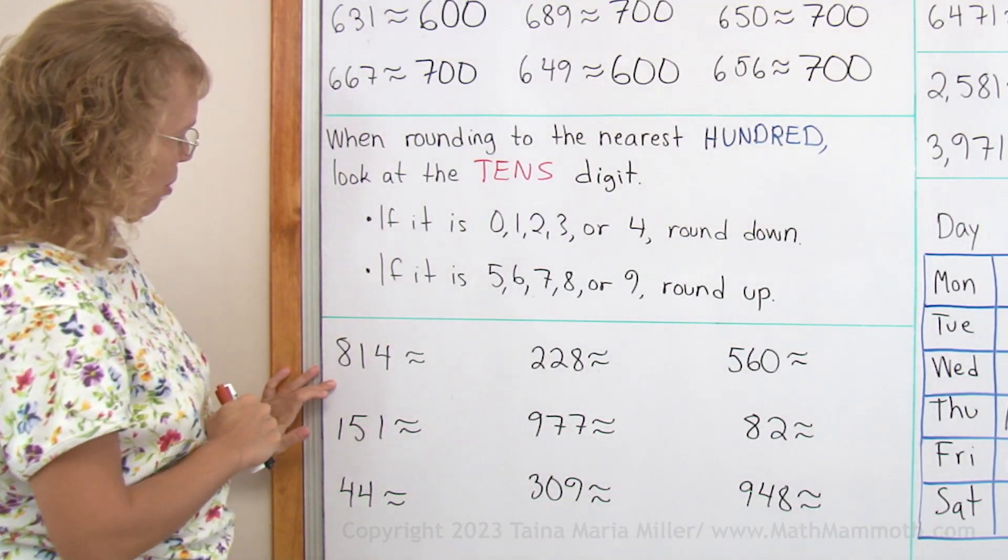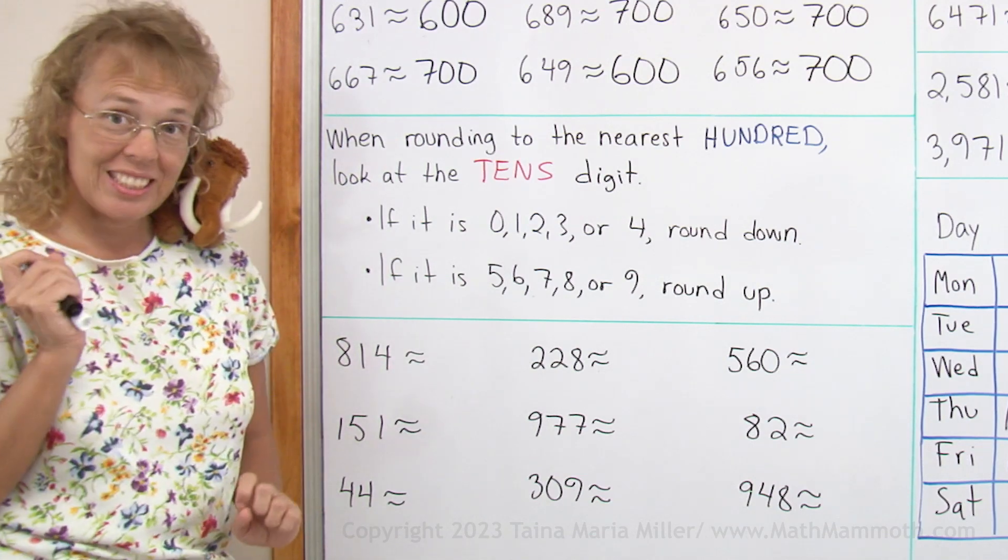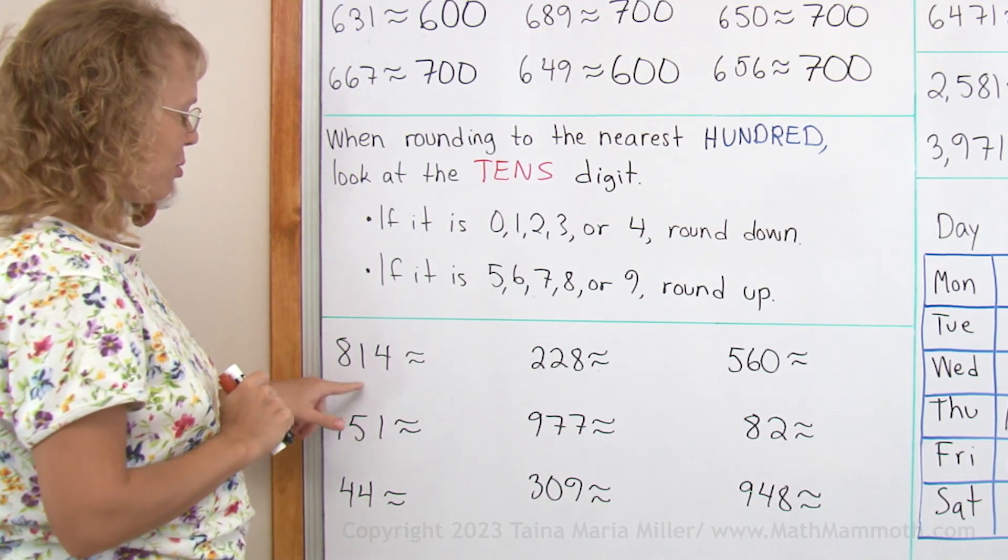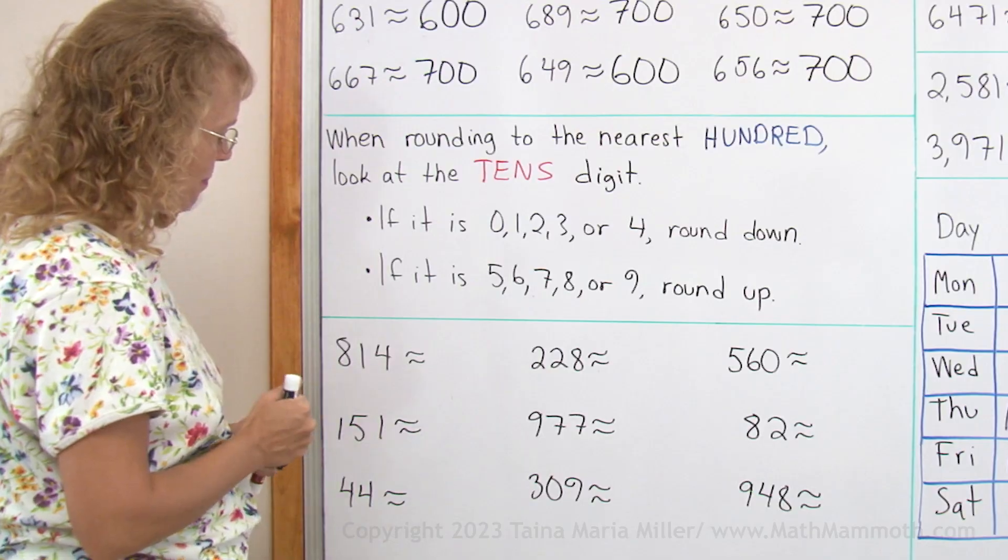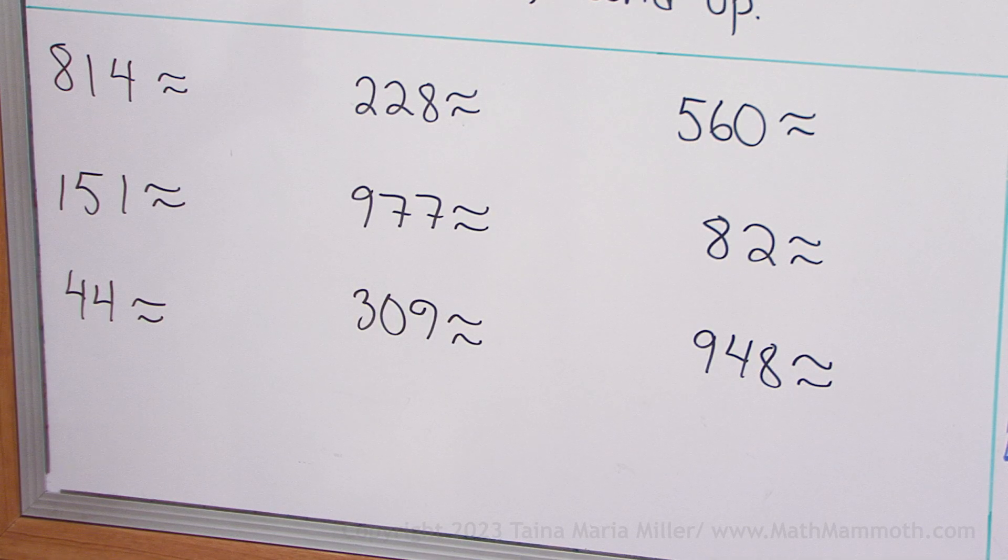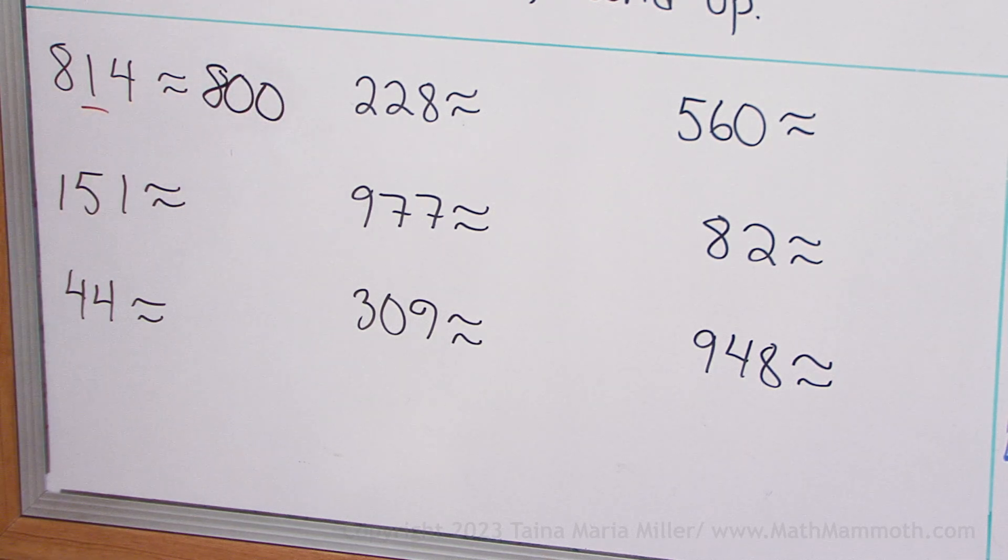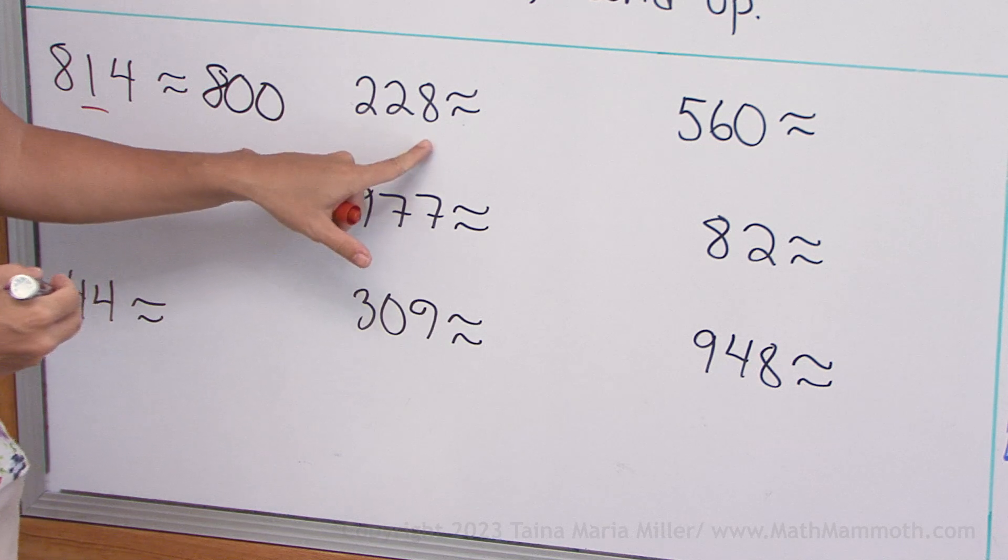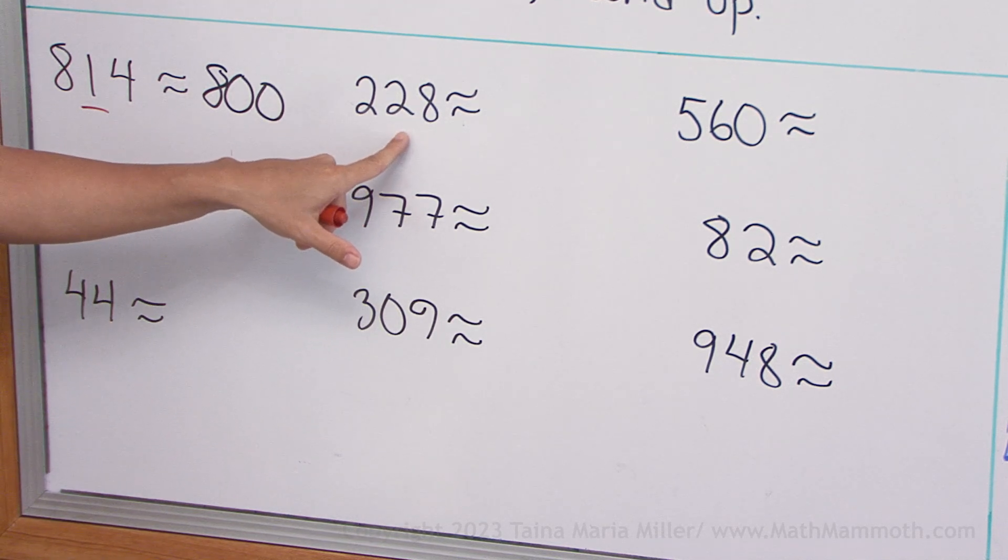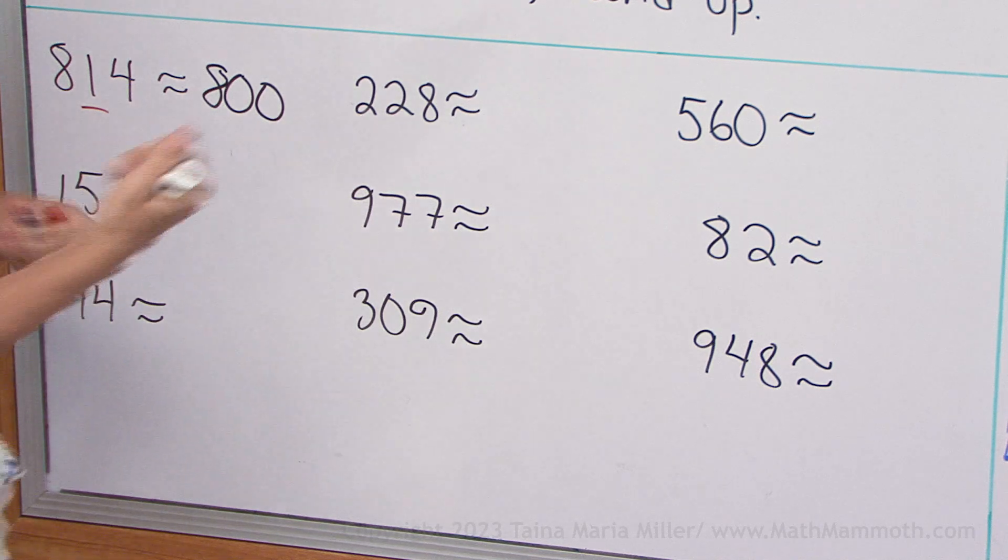Now, let's solve these examples. Round them to the nearest hundred. 814. I hope you can tell without thinking of the rule, but if you think of the rounding rule, then you look at this tens digit. And there's one ten. That means we round down to the previous hundred, to 800. 228. There's 20. So it is less than 50. It's going to be one of those where we round down.